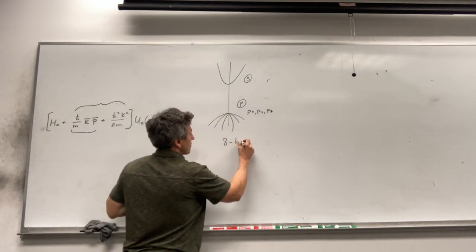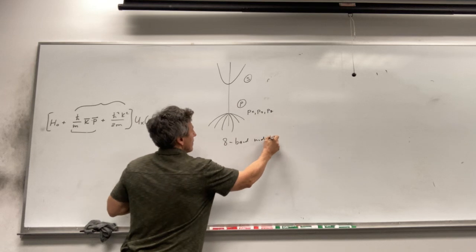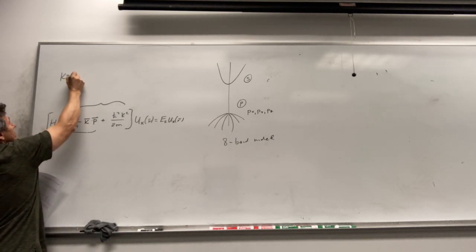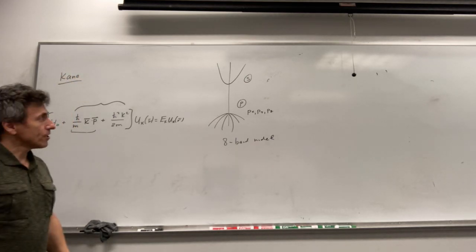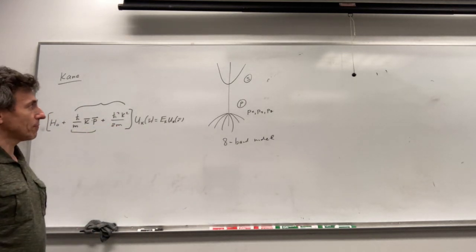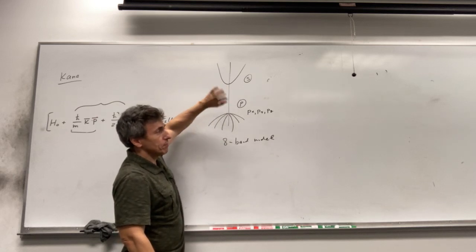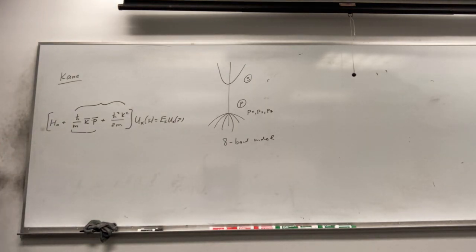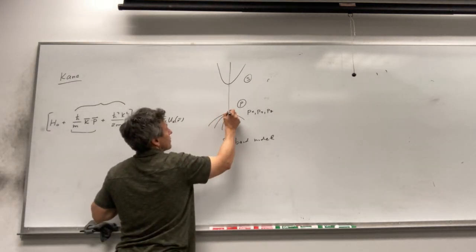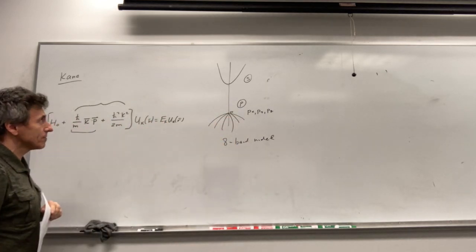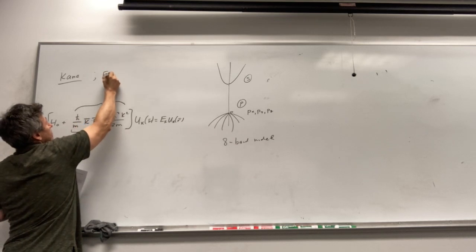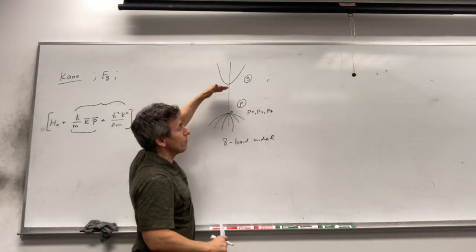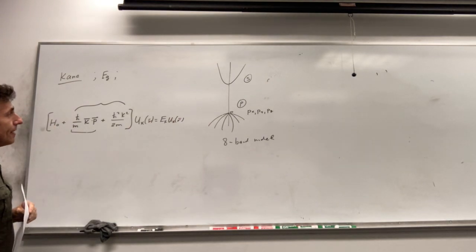This is the eight-band model. The first model based on the Kp approach is called the Kane model. In the Kane model, we don't consider coupling with any other band — only coupling within these four bands plus spin, giving eight bands. The parameters of the Kane model include the band gap, which we set as the energy of the conduction band, and the coupling within these four bands.